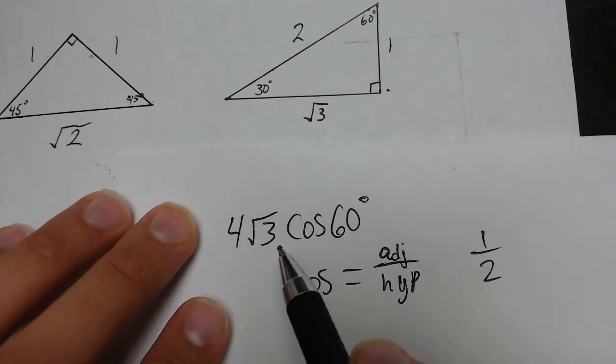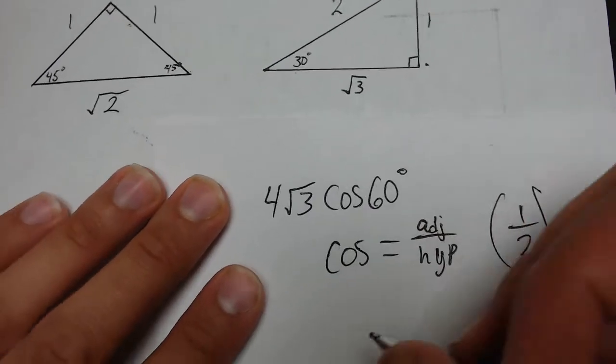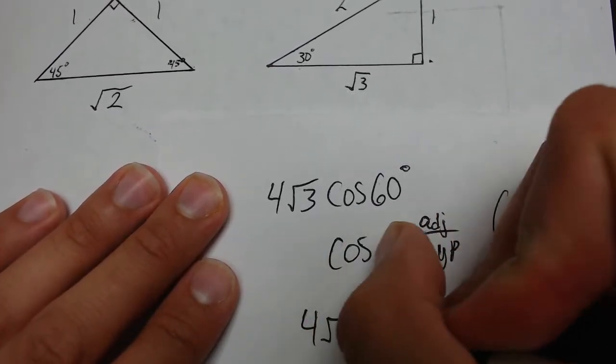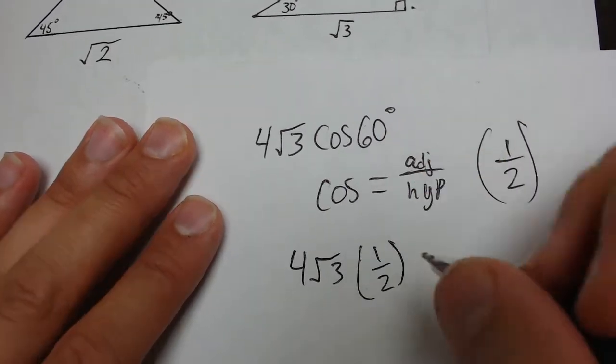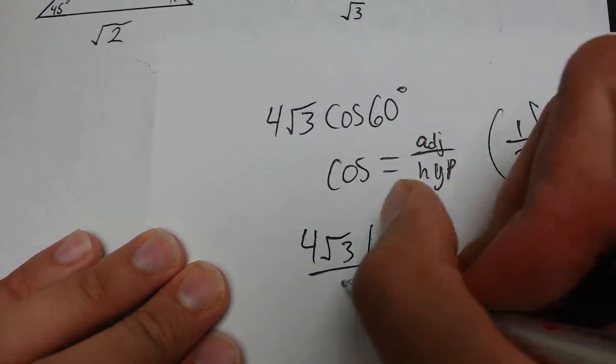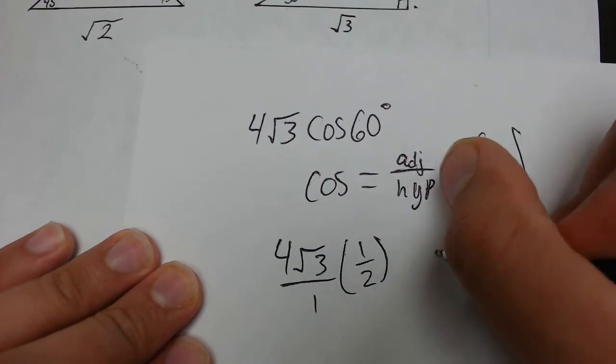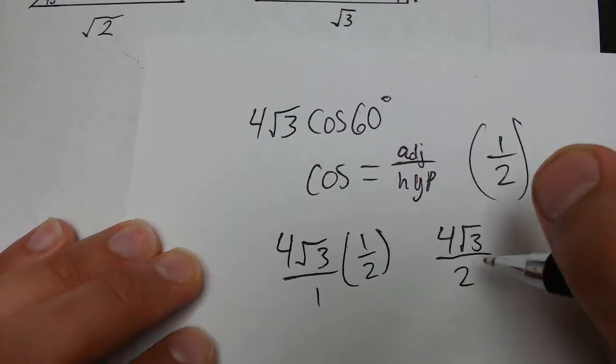We have 4 root 3 times the cosine of 60. So we're going to substitute 1 half for cosine of 60. So now our problem becomes 4 root 3 times 1 half. To multiply a whole number times a fraction, we just put this over 1. We multiply, we get 4 root 3 over 2.